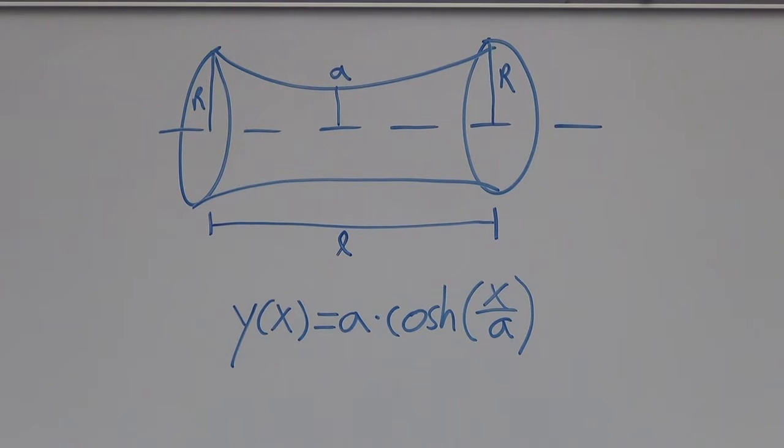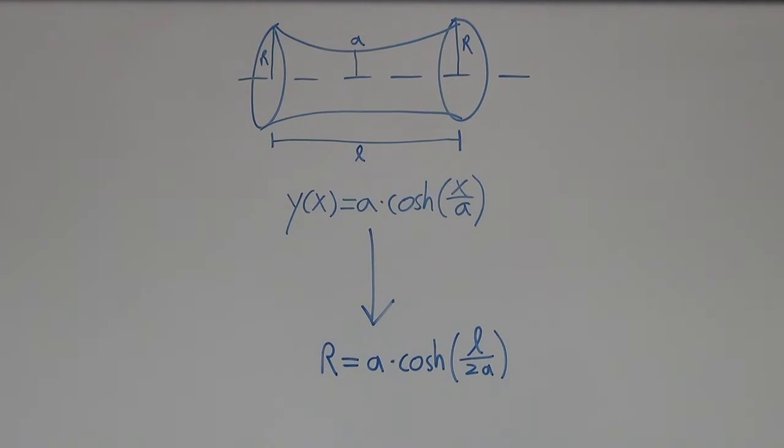If we look back at the hyperbolic cosine function and enter the constraint that it must equal the radius of the rings at the ends, we can find a relationship between the parameters a, r, and l. Using this relationship, we can graph the neck radius a versus the separation l as dimensionless variables.